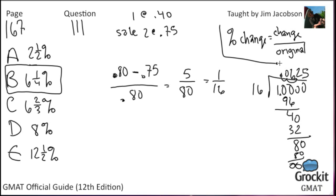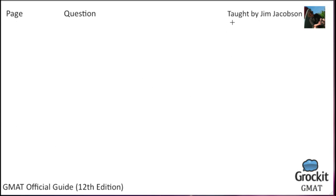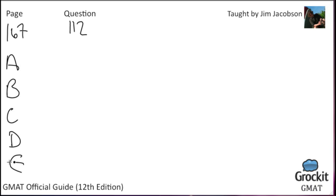Percent change is your buddy — definitely want to have this formula in your head on test day. Last one on page 167, number 112. Answer choices are 1 over S, the square root of S, S times the square root of S, S cubed, and S squared minus S.